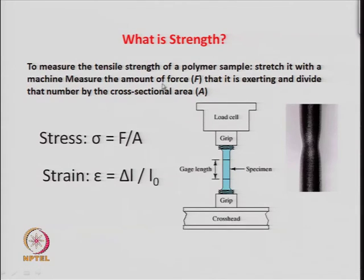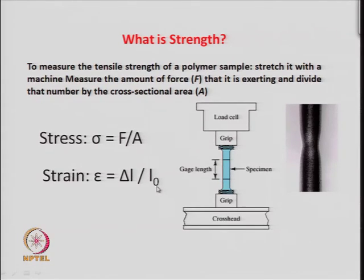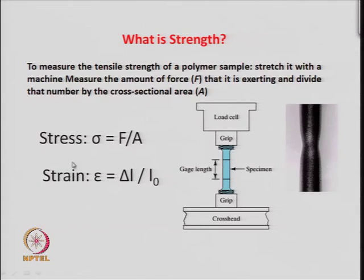To measure tensile strength, for example with a polymer, you stretch it with a machine and measure the force F it exerts. If you know the cross-sectional area, then F divided by the area gives you the stress. The specimen is held between two chambers — one is a load cell where weights are applied, the other end is fixed — and you measure deformation when a load is applied.